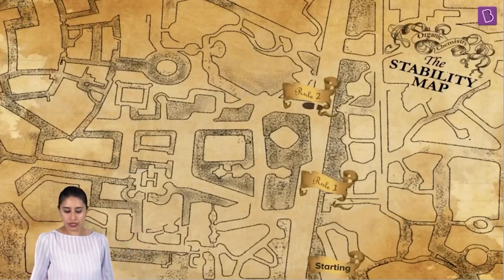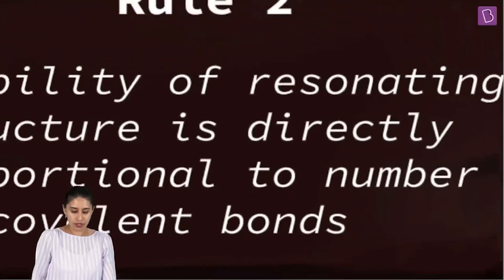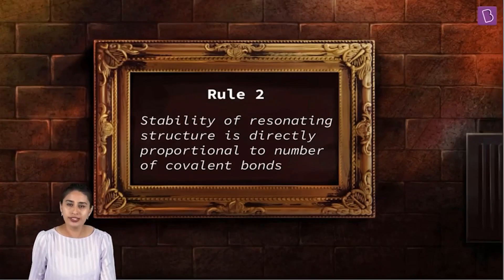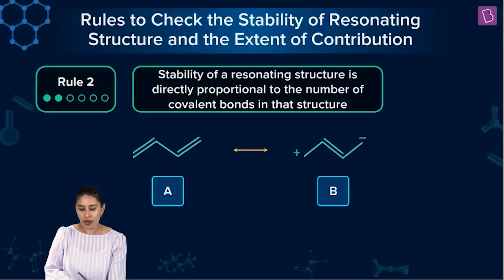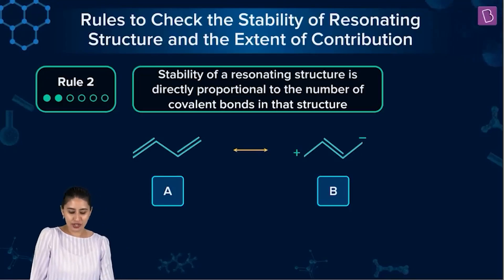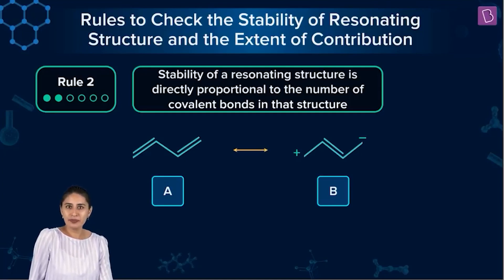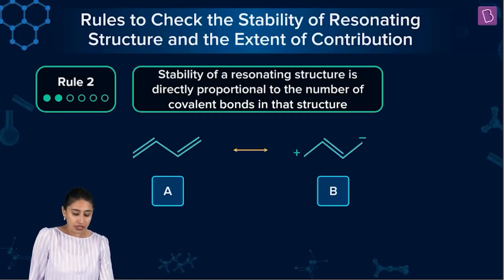Let's move to rule number two. Rule number two says the stability of a resonating structure is directly proportional to the number of covalent bonds. More covalent bonds means more stability. Keeping this rule in mind, out of A and B, if I ask you which is more stable, count the total number of covalent bonds.